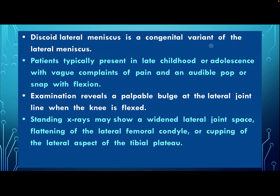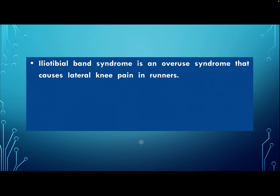Discoid lateral meniscus is a congenital variant of the lateral meniscus. Patients typically present in late childhood or adolescence with a vague complaint of pain and an audible pop or snap with flexion. Examination reveals a palpable bulge at the lateral joint line when the knee is flexed. Standing x-rays may show widening of the lateral joint space, flattening of the lateral femoral condyle, or cupping of the lateral aspect of the tibial plateau.